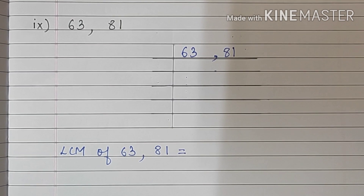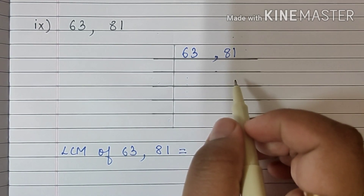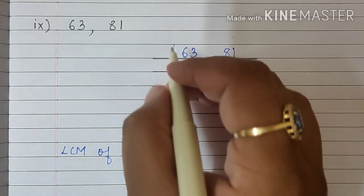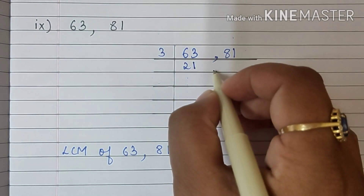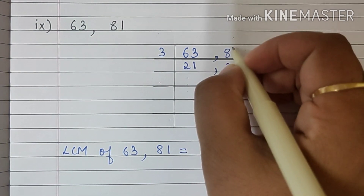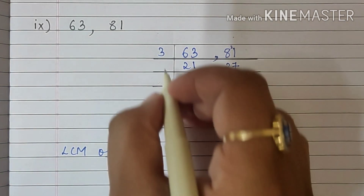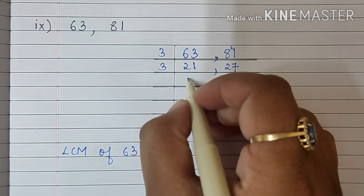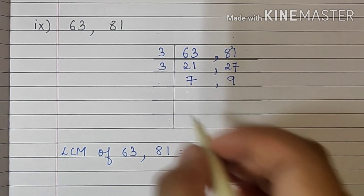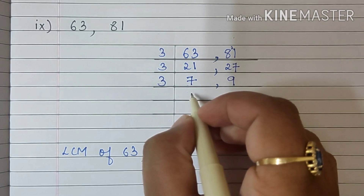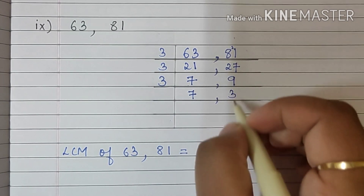Sum number 9: 63 and 81. Now 63 and 81 both are divisible by 3. So we will write here 3. 3 2s are 6, 1s are 3. 3 2s are 6 carry 2, 3 7s are 27. Again both are divisible by 3. 3 7s are 21, 3 9s are 27. 9 is divisible by 3. So 3 — 7 will come down as it is. 3 3s are 9.